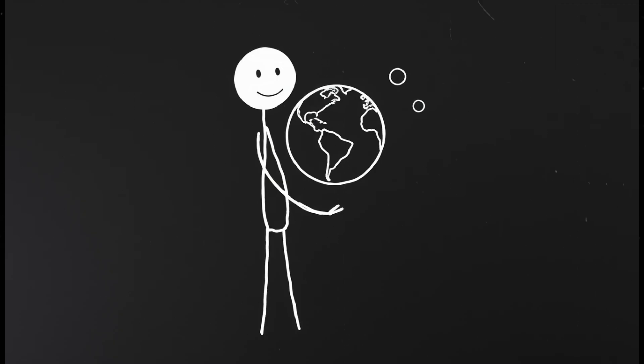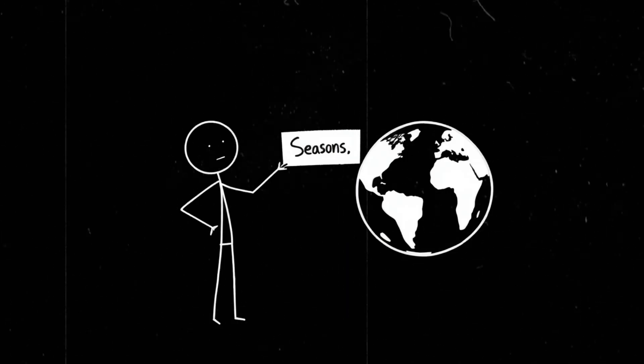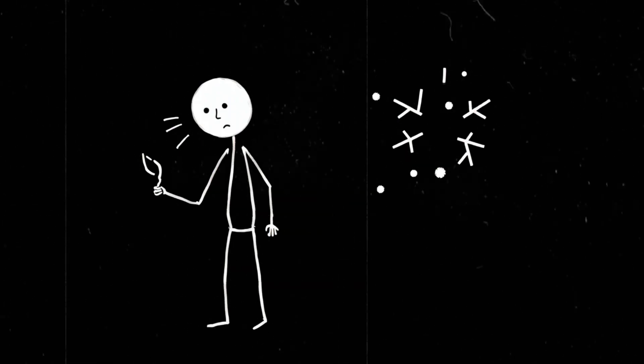A second moon means Earth's orbit and tilt might have been different from the start. And our planet's tilt is a big deal. It's why we have seasons. If two moons had messed with that, we might have ended up with extreme winters, scorching summers, or even an unstable climate that made it impossible for complex life to evolve.